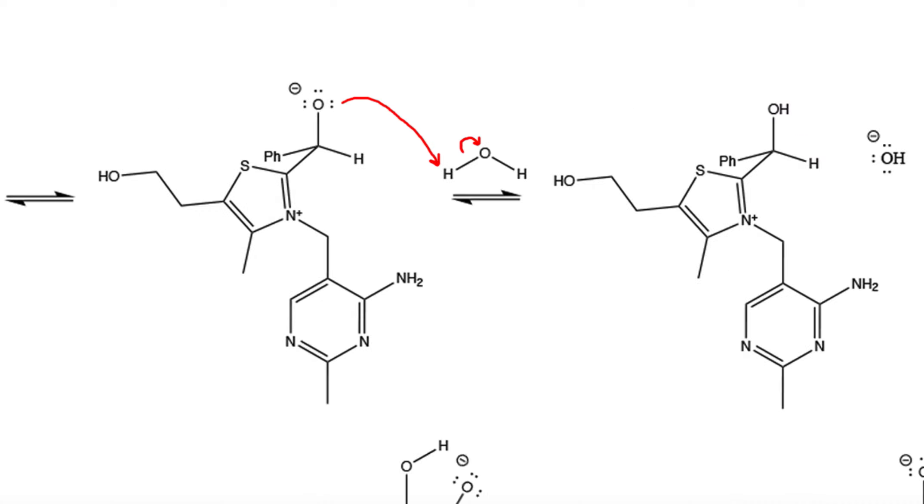This step produces an alcohol, and now we have this tetrahedral intermediate. Because of the presence of this thiamine group,